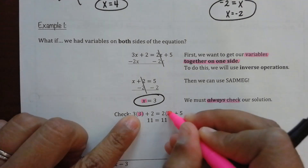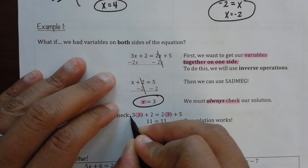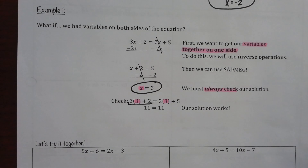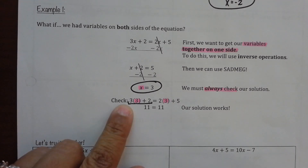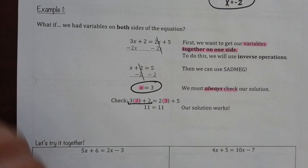Because do we see an x on both sides? Yes. So, I have to type these in individually. Does that make sense? Type in this first side.